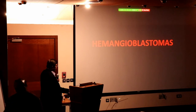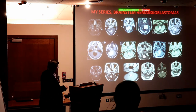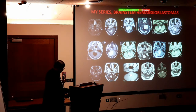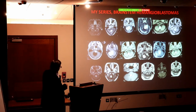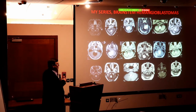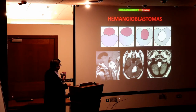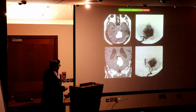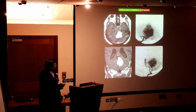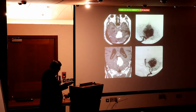Hemangioblastomas are a common lesion in the posterior fossa and brain stem. My series includes a large number — they can occur supratentorially or infratentorially. Commonly in the cerebellum, but also in the brain stem. The old notion that hemangioblastoma is always a cystic lesion with a mural nodule is no longer valid — they can be totally solid without a cyst, sitting on the brain stem surface, embedded within it, or totally intrinsic. These solid ones are the most difficult because they have feeders and drainage veins — like AVMs, they are notorious. Angiography shows the blush, feeders, and draining veins.